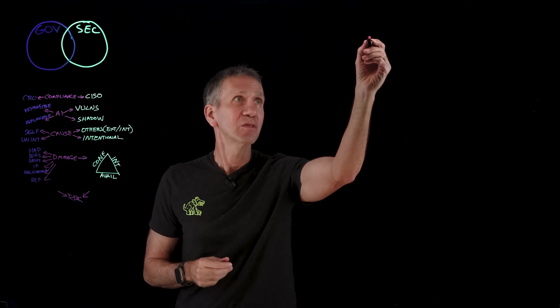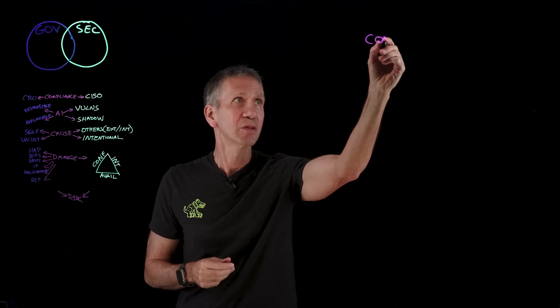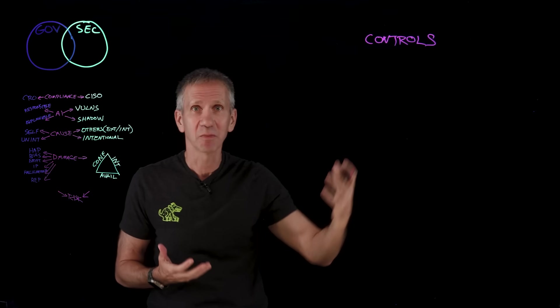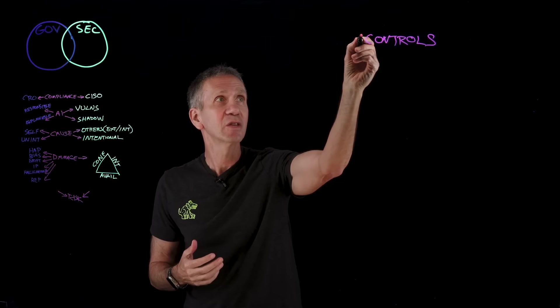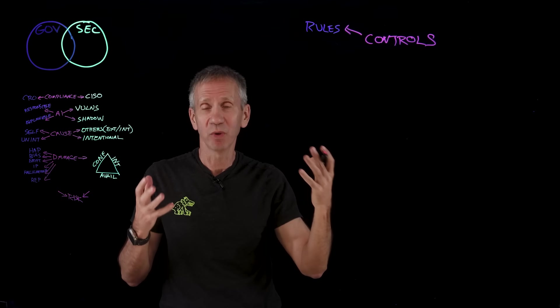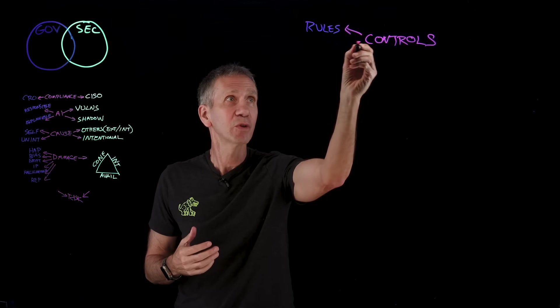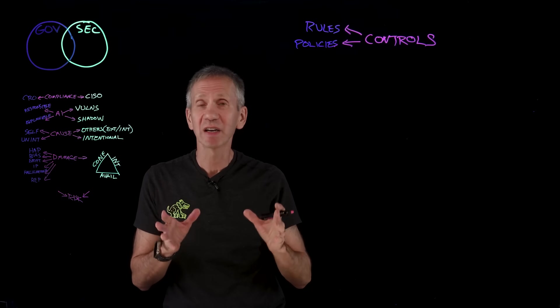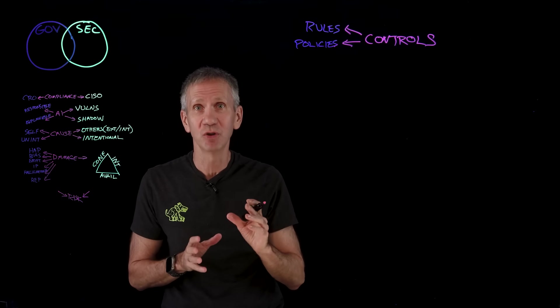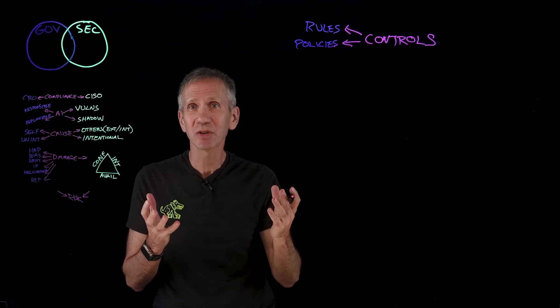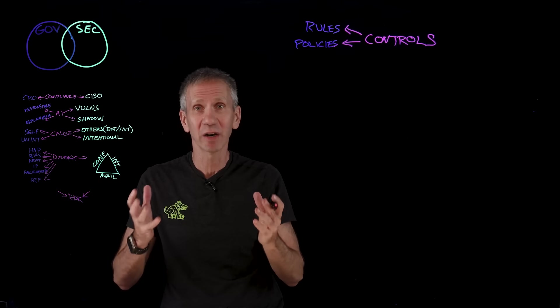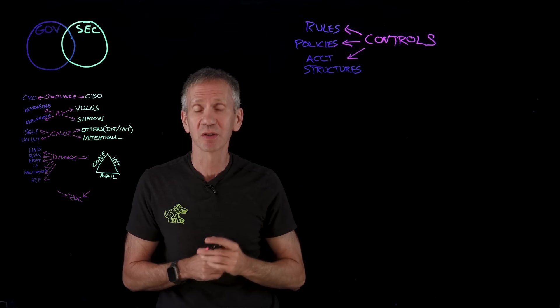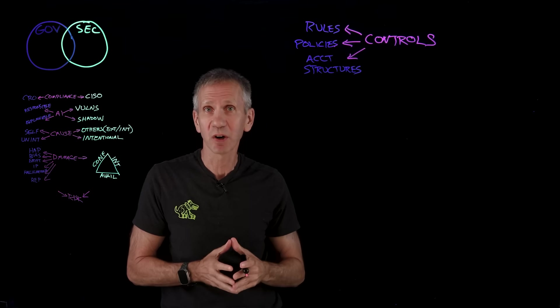One of the things is we're going to need controls in place. Controls are the things that let us control what's happening with the system. On the governance side, we want to have a set of rules that we have spelled out, that we've put those into policies that are well understood. We need accountability structures. Who's responsible for this, and who's responsible for which parts of it?